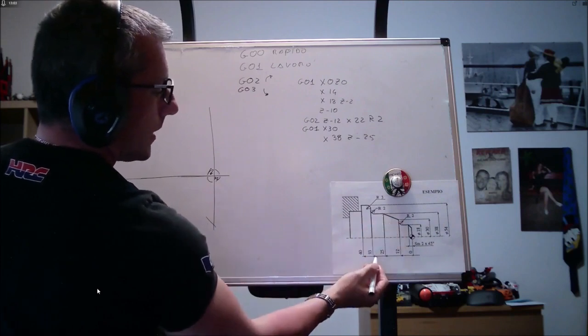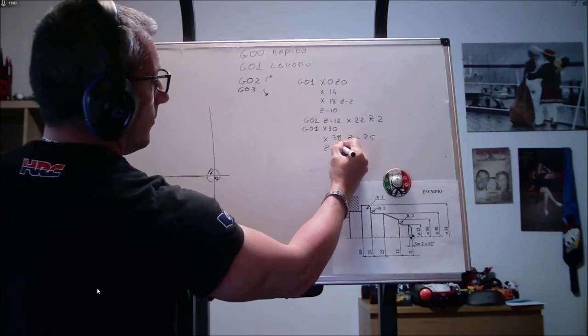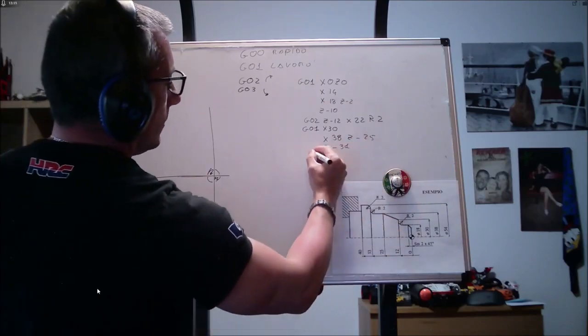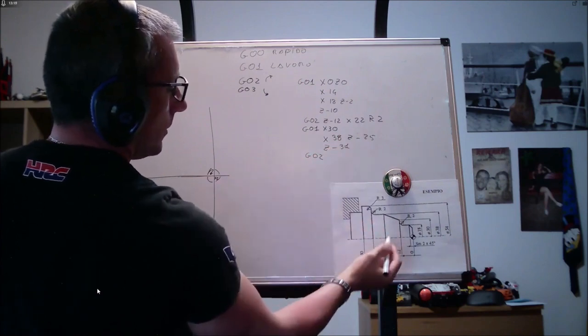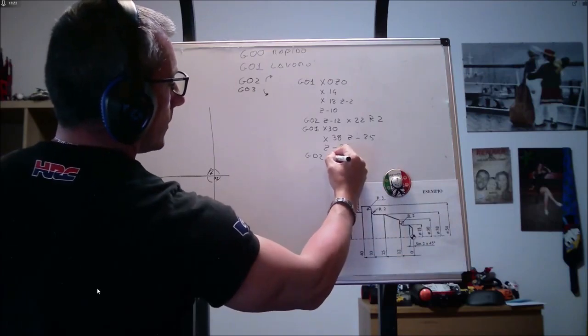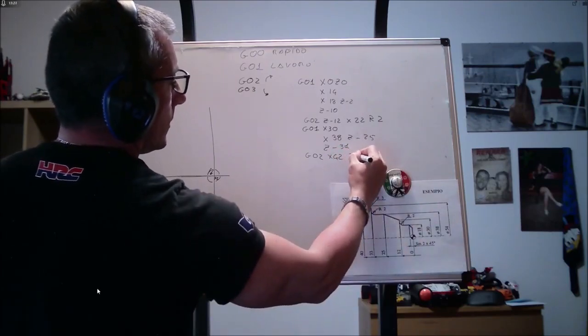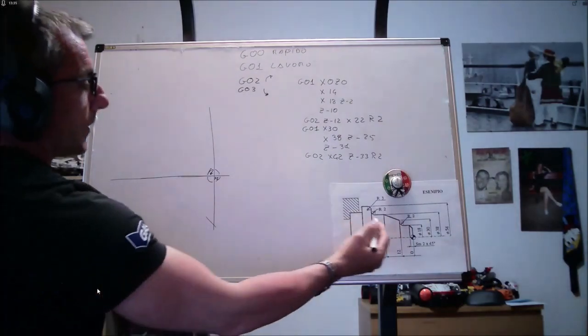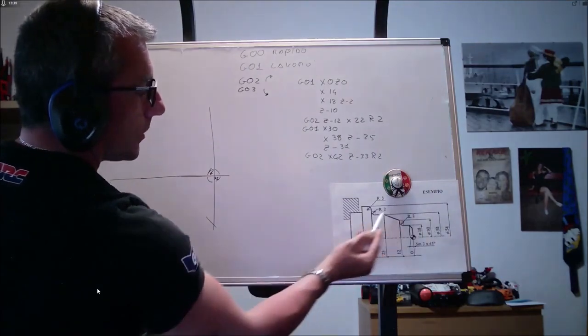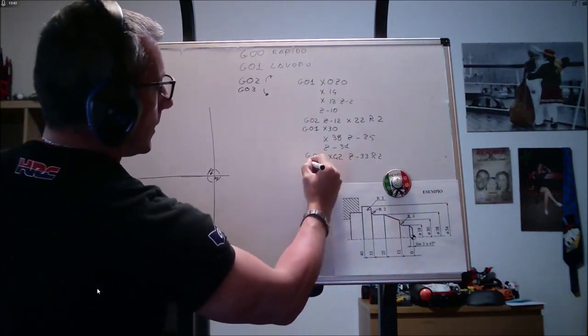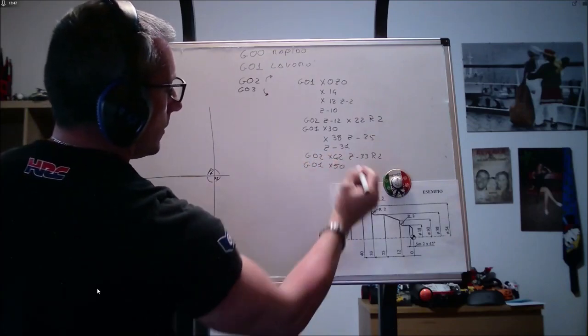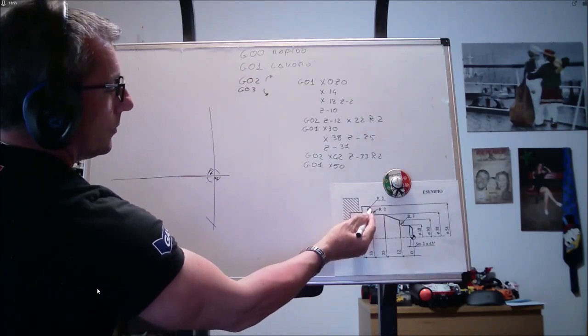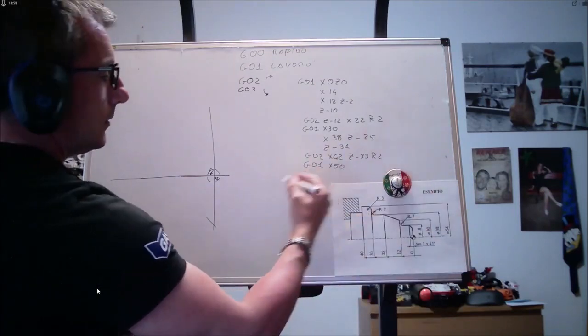Poi, da qua, vado a z meno 33, no, 31. Il raggio si percorre sempre in senso anti-orario, quindi g02, x38 più 4, 42, e z meno 33. R 2, ci siamo? Perfetto. Ora, devo andare a x54 meno due volte il raggio, quindi x50, attenzione, g01, x50, e poi mi sposto.